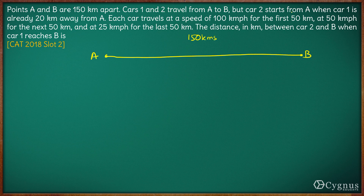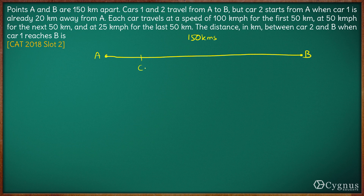Car 2 starts from A when Car 1 is already 20 kilometers away. Car 1 starts before Car 2. Once Car 1 has already traveled 20 kilometers, at that point Car 2 starts.